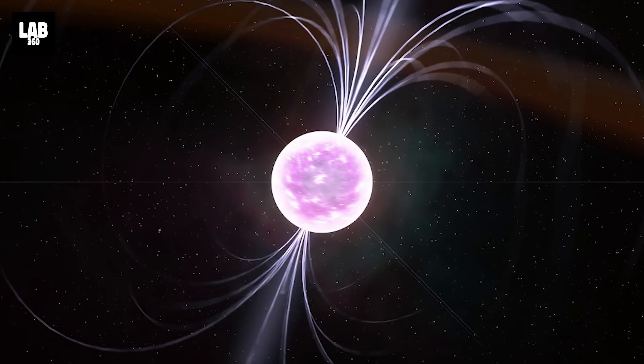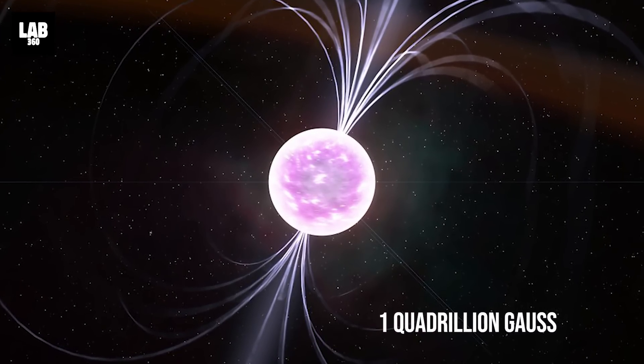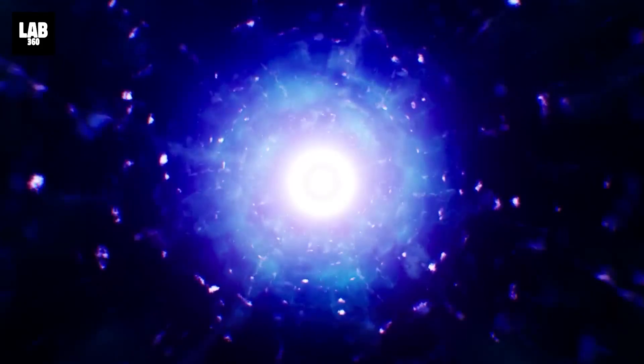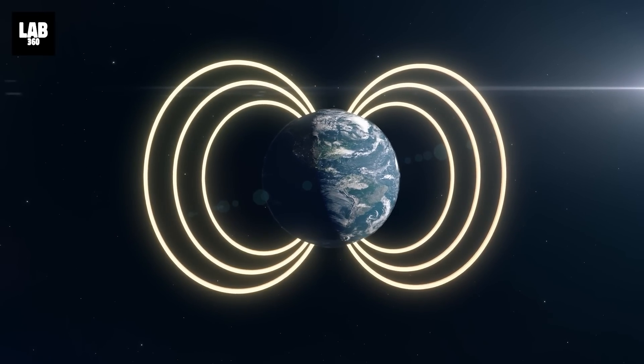The magnetic field of a magnetar is up to one quadrillion gauss. That is about 1,000 times stronger than a normal neutron star and about a trillion times that of the Earth's.